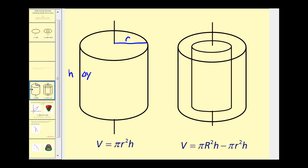For a washer, we have to determine the volume of the outer cylinder and subtract the volume of the inner cylinder. So this would be big R, and this would be little r, and the height — with this orientation — would be equal to delta y. We'll combine this idea with integration to determine the volume of a solid.